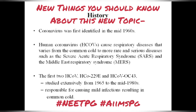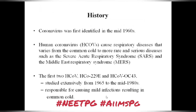Coronaviruses are not very new — they have been identified in the 1960s and were known to cause respiratory diseases ranging from the common cold to more serious diseases such as severe acute respiratory syndrome (SARS) and Middle East respiratory syndrome (MERS). The first two human coronaviruses, HCoV-229E and HCoV-OC43, were isolated in 1965 and the mid-1980s and caused very mild infection resulting in the common cold. These were basically endemic strains of coronaviruses.